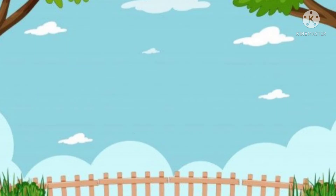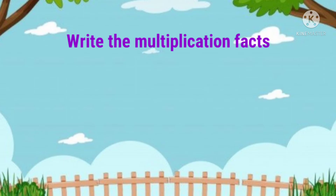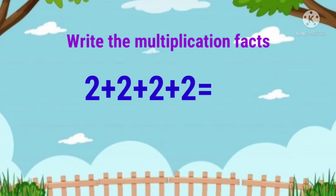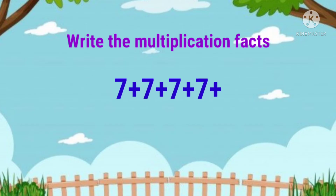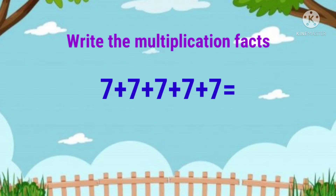Write the multiplication facts. 2 plus 2 plus 2 plus 2 plus 2 plus 2 is equal to 4 into 2. 7 plus 7 plus 7 plus 7 plus 7 plus 7 is equal to 5 into 7.